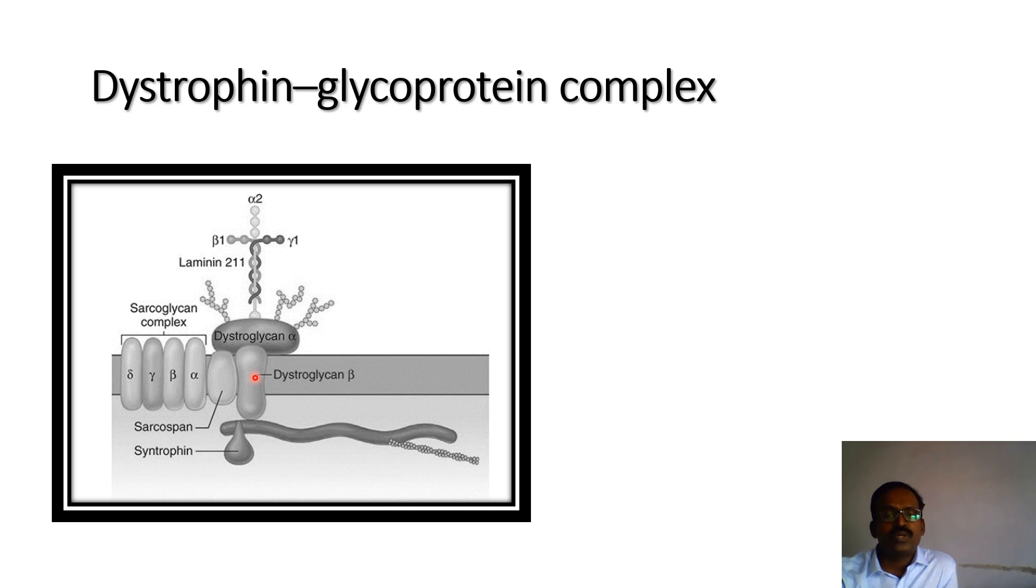The dystropin-glycoprotein β is connected through the alpha, beta, gamma, delta subunits of sarcoglycan. The dystropin-glycoprotein complex provides strength to the muscle by supporting the myofibril and connecting to the extracellular matrix.